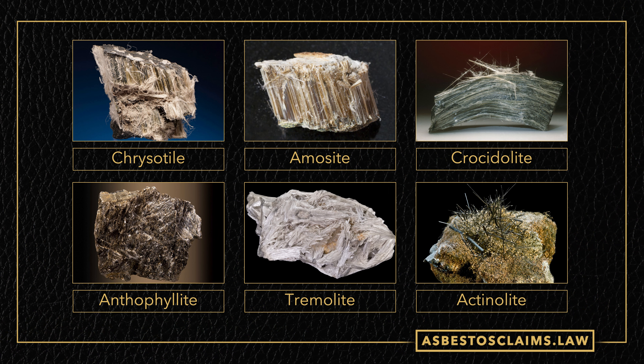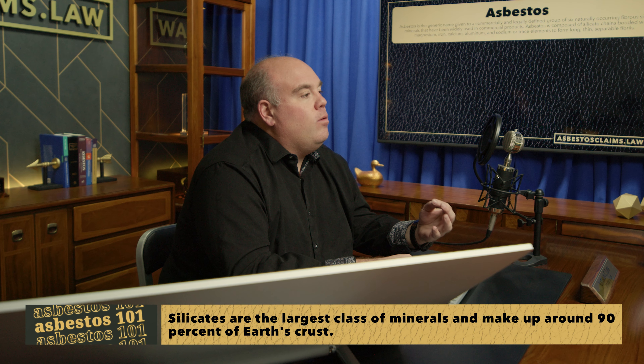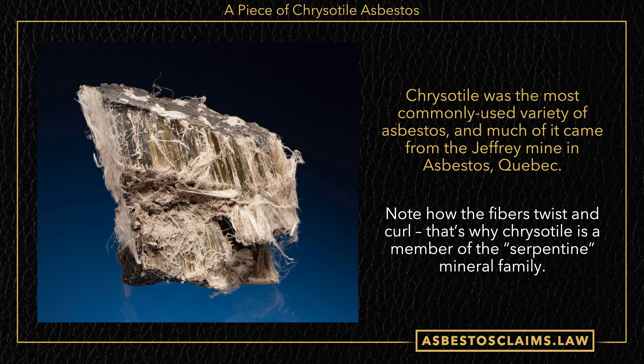Chrysotile was and is the most widely used type of asbestos in the world. Typically, when people are talking about asbestos, they probably mean chrysotile. These minerals are all silicates, as are most rocks on earth — about 90-something percent. And they have one special property, which is that they form long, thin fibrils. Let's take a look at chrysotile itself. This is the most common variety of asbestos. It was used in just about everything that they used asbestos in.